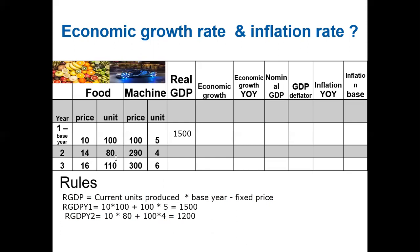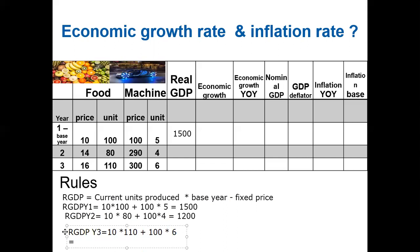For year three, the situation changed. Using the same fixed prices with current units: 10 times the current quantity plus 100 times 6 gives us a real GDP of 1700. So we now have real GDP values across the three years: 1500, 1200, and 1700.